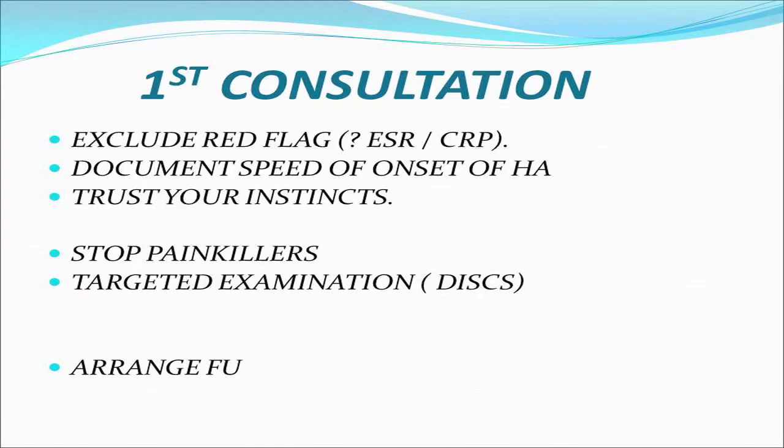During the first consultation it's important to establish if the headache has any red flags — features of the headache which lead you to consider there may be a serious underlying cause. If patients over 50 present with a new onset headache, it's important to check the ESR and CRP to make sure they don't have temporal arteritis. It's also important to specifically ask the patient how quickly the headache reached maximum severity. What you're looking for is whether the person has a thunderclap headache, as about 10% of thunderclap headaches are subarachnoid or brain haemorrhages, and obviously that's something you don't want to miss.